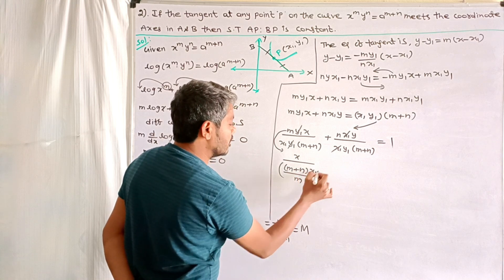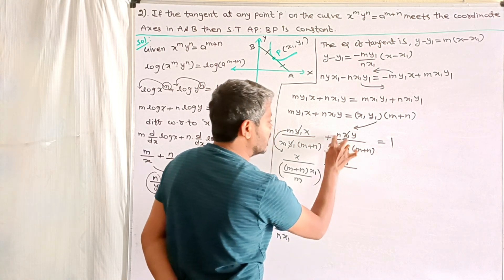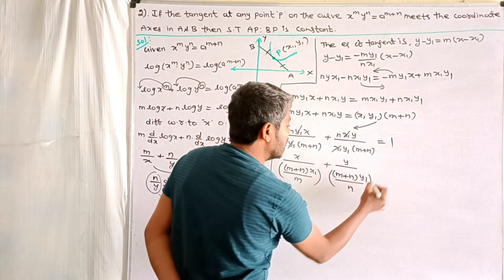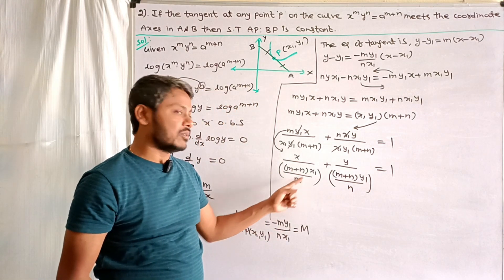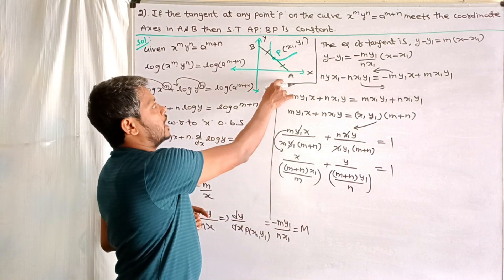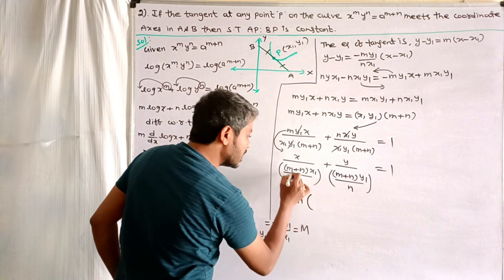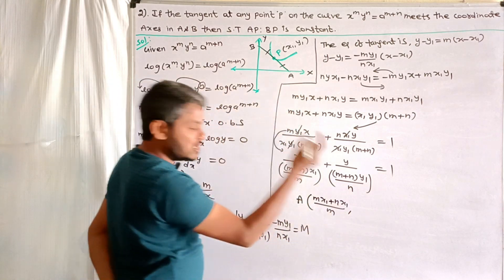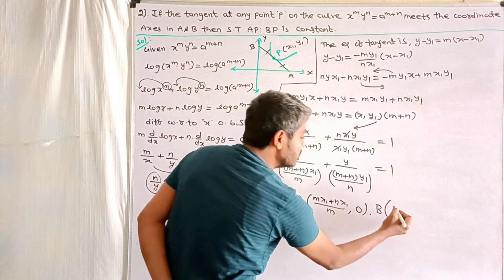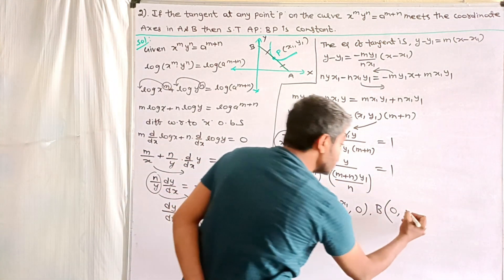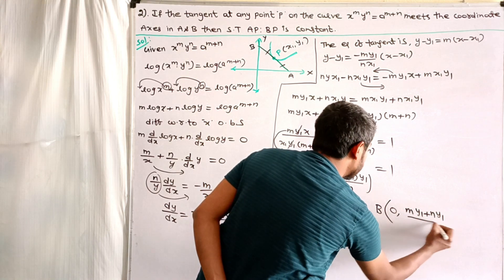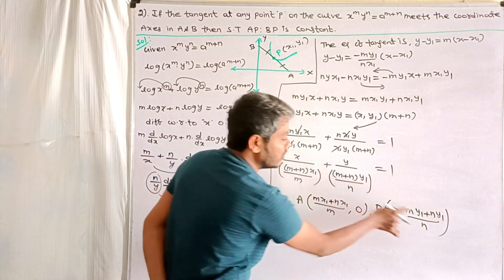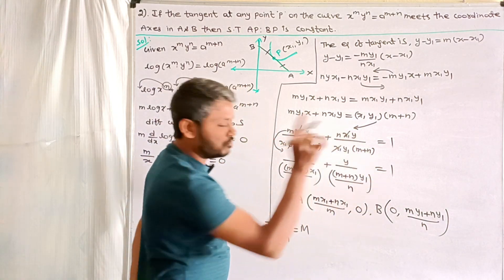Dividing both sides by x₁·y₁·(m+n) gives the intercept form. The x-intercept is (m+n)x₁/m and the y-intercept is (m+n)y₁/n. Therefore point A = ((m+n)x₁/m, 0) and point B = (0, (m+n)y₁/n).